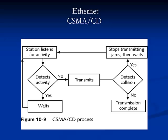CSMA/CD, or Carrier Sense Multiple Access with Collision Detection, are the rules for communication used by shared Ethernet networks. Carrier sensing means that the station listens for activity. If it senses no activity, it will transmit. If it does hear activity, it waits and tries again later. If a collision is detected, transmission stops, waits an arbitrary period of time, then retransmits. Multiple access refers to the fact that Ethernet nodes can be connected to a network and can monitor and issue traffic.